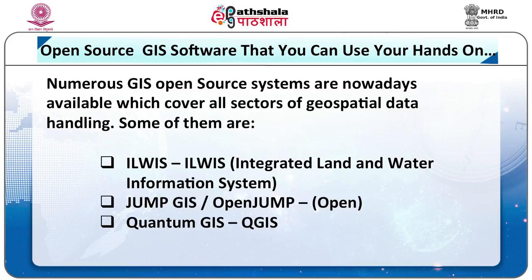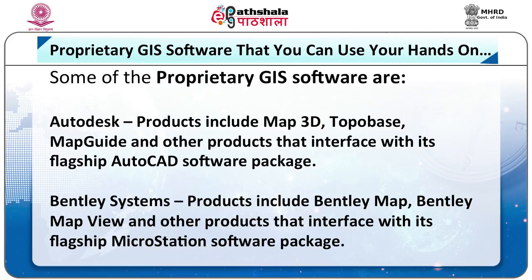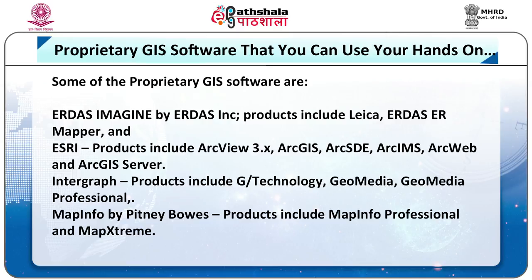Now let's come to proprietary software — the companies that are slightly expensive. We have Autodesk products including Map 3D, Topofolio, and AutoCAD. We have Bentley Systems products. These are slightly expensive, but when you have high-end requirements for your start-ups, you will need more applicability. Then there is Erdas Imagine, wonderful for spatial data from space platforms, and Erdas Mapper. ESRI products — where Jack Dangermond is the president — include ArcView GIS, ArcGIS, ArcMap, story maps, and Insights.